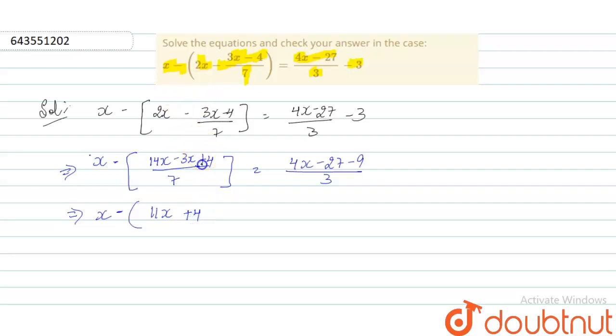minus times minus is plus. So plus 4 by 7 equals 4x minus 36 by 3.